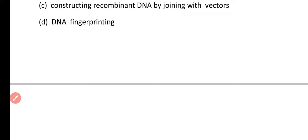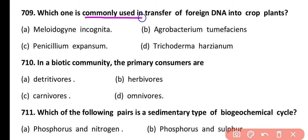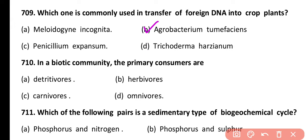Question 709. Which one is commonly used in transfer of a foreign DNA into crop plants? Meloidogyne incognita, Agrobacterium tumefaciens, Penicillium expansum, or Trichoderma harzianum? Correct answer is option B. Agrobacterium tumefaciens is a natural genetic engineer and is used for the transfer of foreign DNA into crop plants.